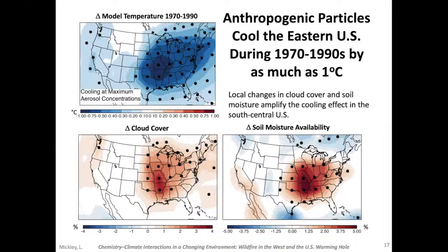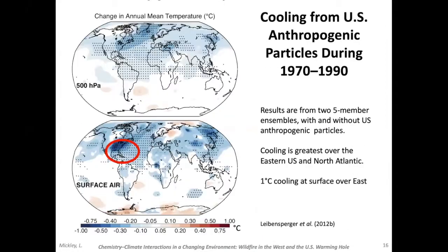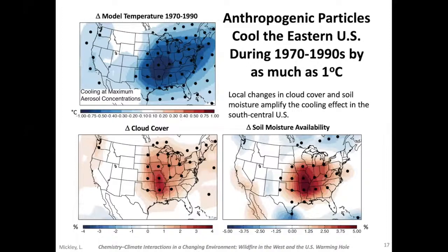What's interesting is we see not just temperature changing, but changes in other meteorological variables. At the bottom left, we see a change in cloud cover — we see more clouds. At the bottom right, we see increasing soil moisture. With less sunlight reaching the surface, you get more moist soils and less evaporation from the soils. So in the model anyway, we see greater soil moisture, and that could be important for farmers.